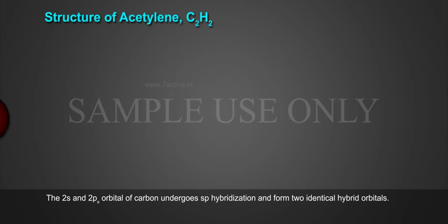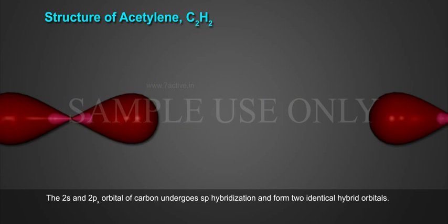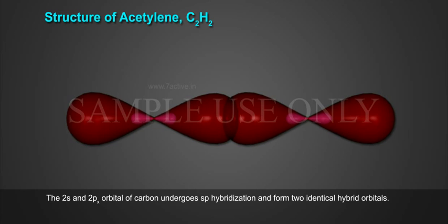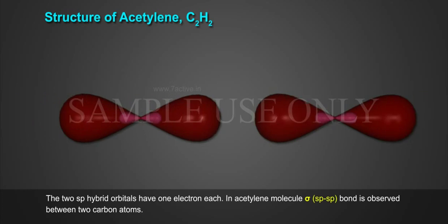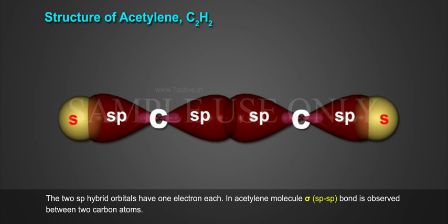The 2s and 2px of carbon undergoes SP hybridization and forms two identical hybrid orbitals. The two sp-hybrid orbitals have one electron each.